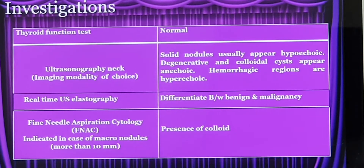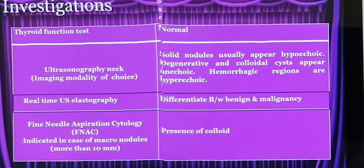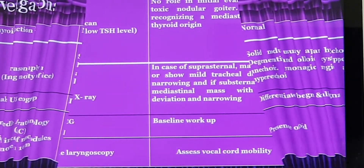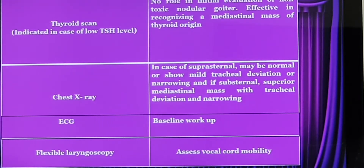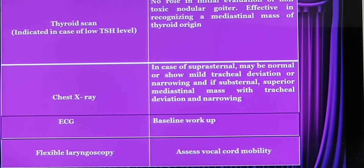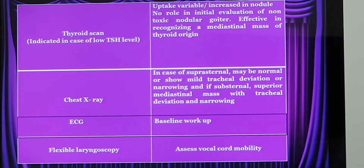I will tell you which conditions lead us to prefer FNAC when the nodule is less than 10 millimeters. The next investigation is a thyroid scan. If you do a thyroid scan, it will show whether it is a cold nodule or a warm nodule. But usually in multinodular goiter, we do not prefer to do a thyroid scan.